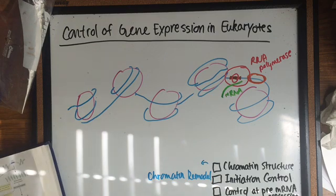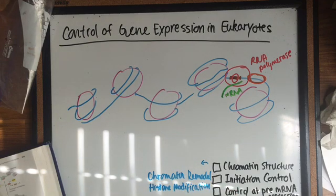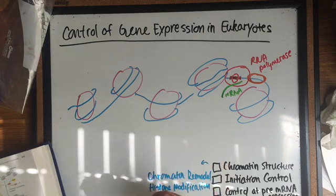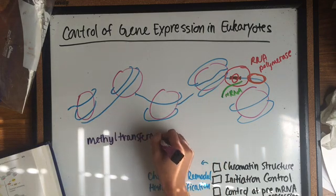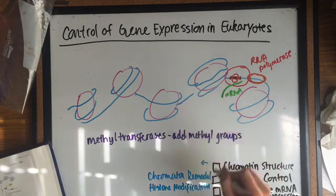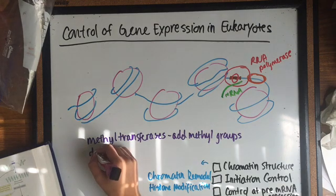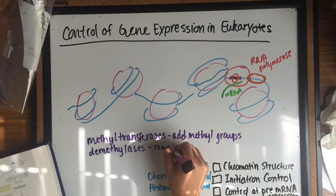Now, let's look at histone modification, in which a positively charged tail domain interacts with the negatively charged phosphate groups. One type of histone modification is the addition of methyl groups to the tails of histone proteins. Enzymes called methyltransferases add methyl groups to specific amino acids, and demethylases remove methyl groups from histones.